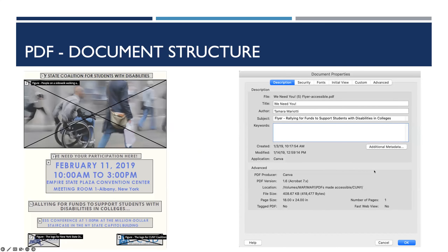PDF document structure uses tags that provide logical reading order. Gray boxes in numerical order surround each element in the document — these tags provide structural information about the document's content, and screen readers interpret and read them aloud. Each element needs a tag based on its type: headings get the heading tag, regular text gets the paragraph tag, images get the figure tag, and so on.